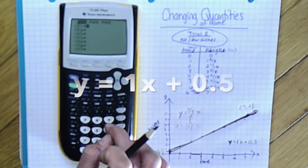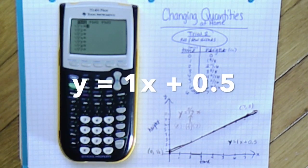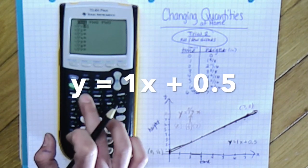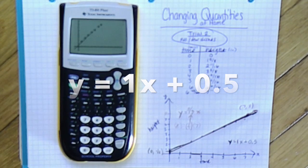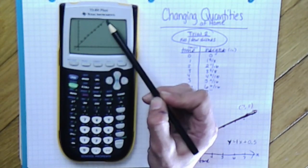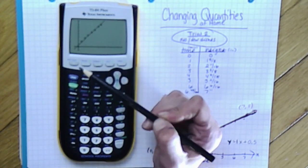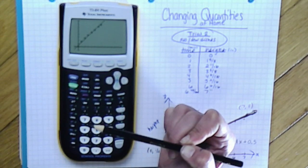What does that look like on the graphing device? So we can go to y equals and then type in y = 1x + 0.5 and then graph it, and you can see that that line fits the data pretty well.